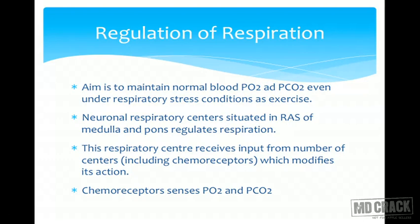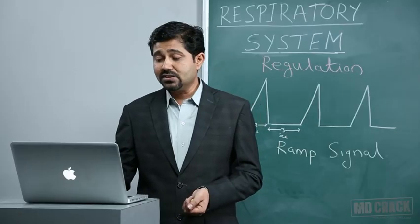The chemoreceptors sense mainly oxygen concentration and carbon dioxide concentration and give information to the respiratory centers, which then modifies respiration accordingly. If the oxygen level is falling, the information is given to the respiratory centers and ventilation will be increased. The same happens if carbon dioxide level increases. Apart from chemoreceptors, even the cardiovascular center, the deglutition center, and even higher centers from the cortex and hypothalamus — all send information to the respiratory center.